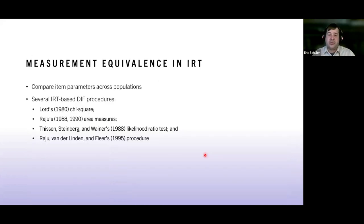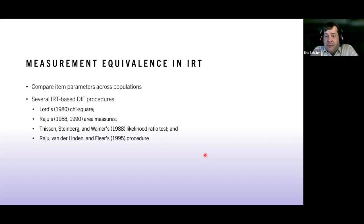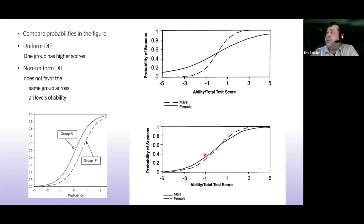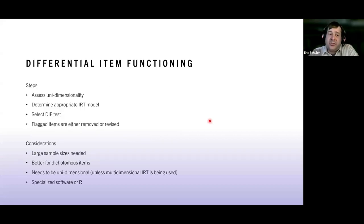When doing measurement equivalence in IRT, you're comparing item parameters across different populations. There are different procedures: Lord's chi-square test, Raju's area measure, distance likelihood ratio test. A couple of my favorites include a logistic regression methodology that allows you to assess both uniform and non-uniform DIF — some options only assess one or the other. Sometimes you have to use multiple assessments to detect bias within items.